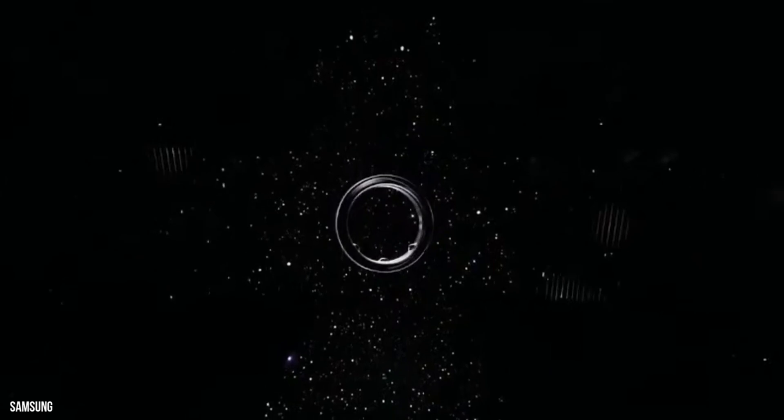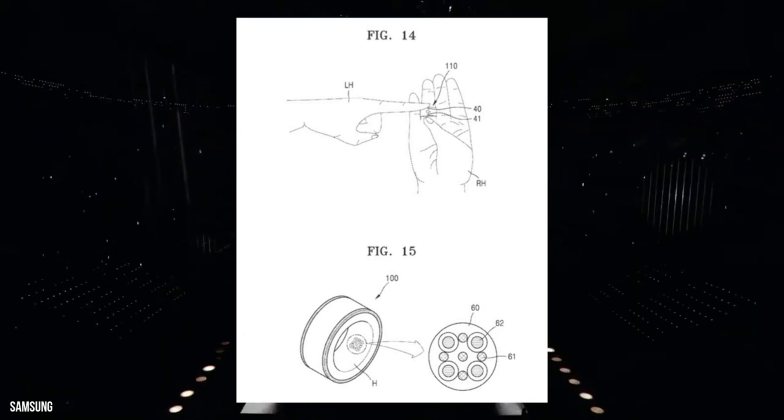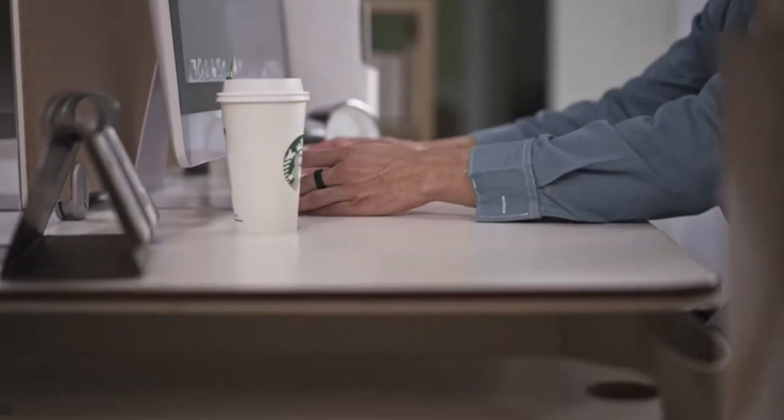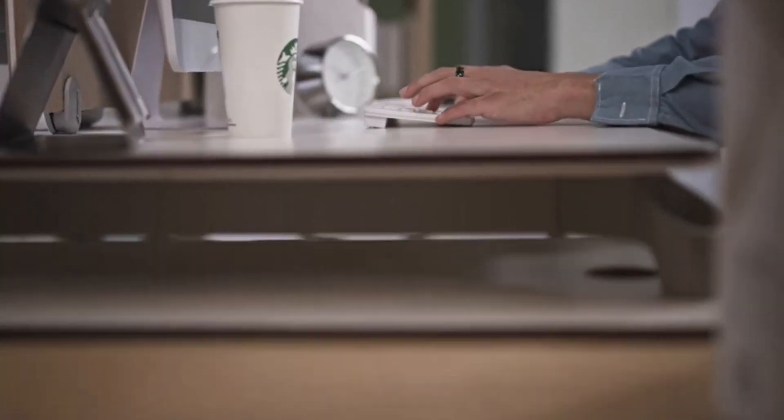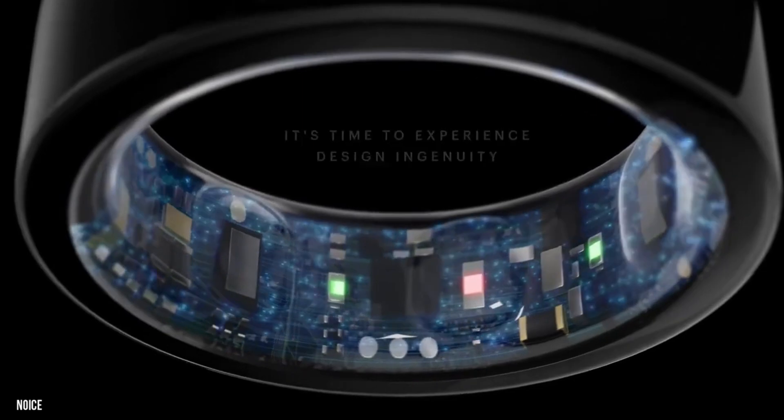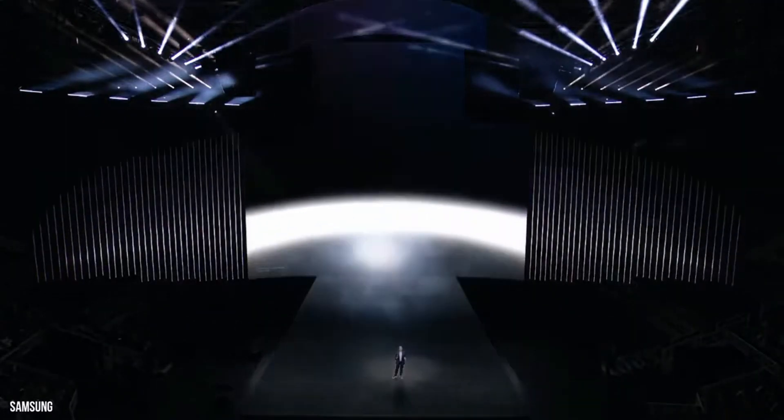Samsung's strategic move into the smart ring arena could also see the Galaxy Ring becoming an accessory for the Galaxy Watch. This approach mirrors other successful products in the market, such as the Amazfit Helio, which seamlessly integrates with existing smartwatches. The convenience of a bundled package could make Samsung a formidable player in this evolving market.